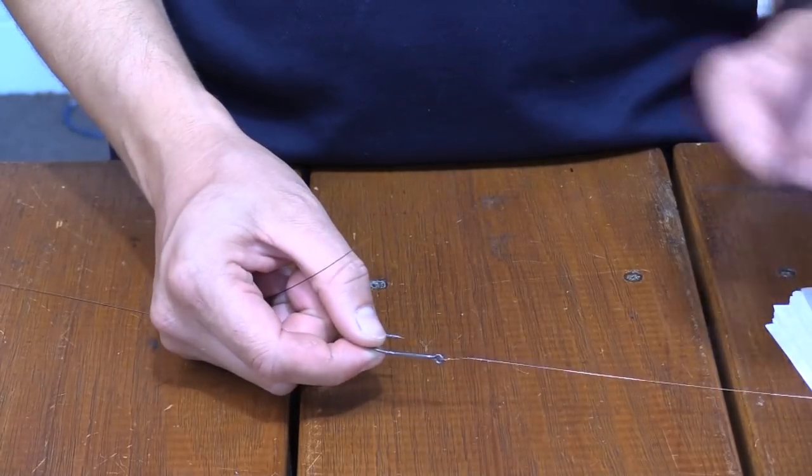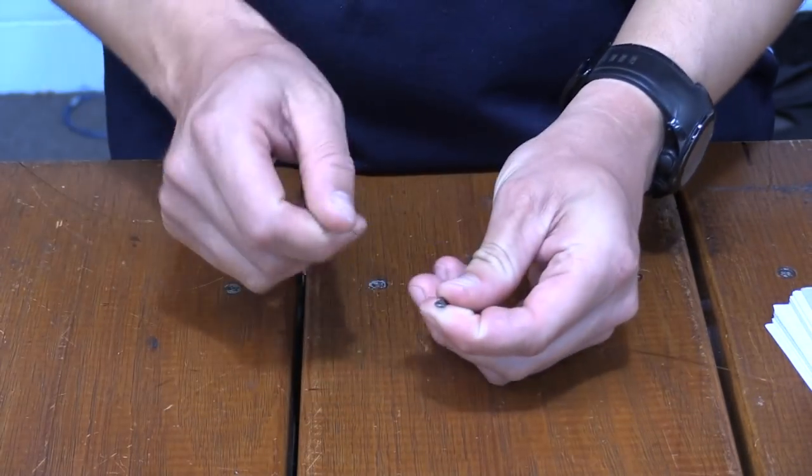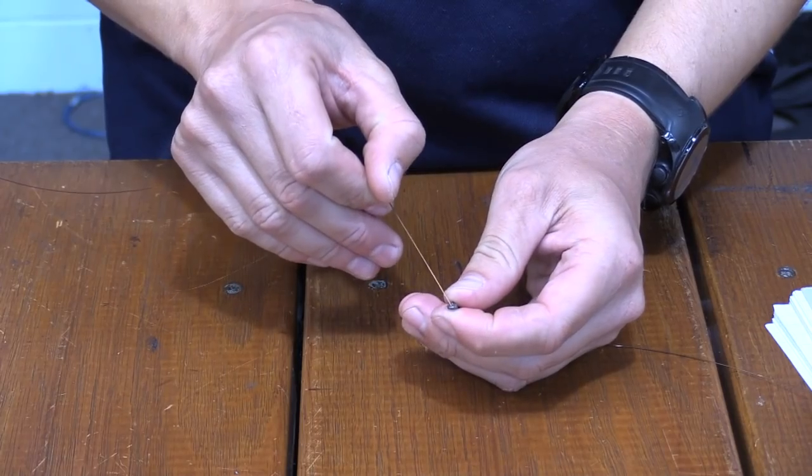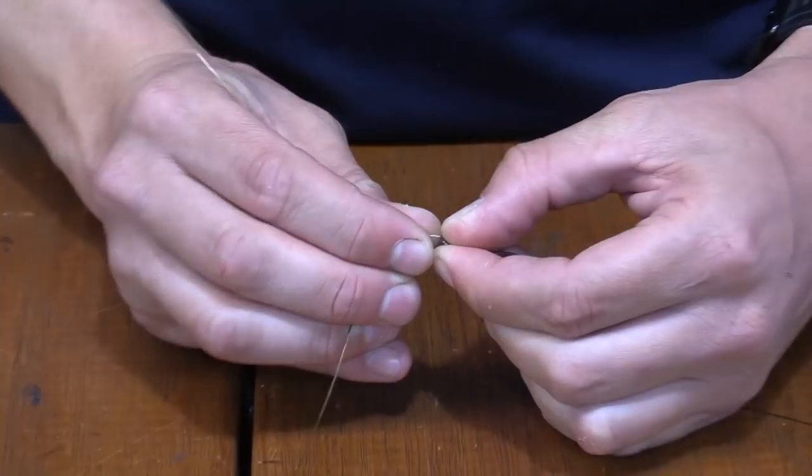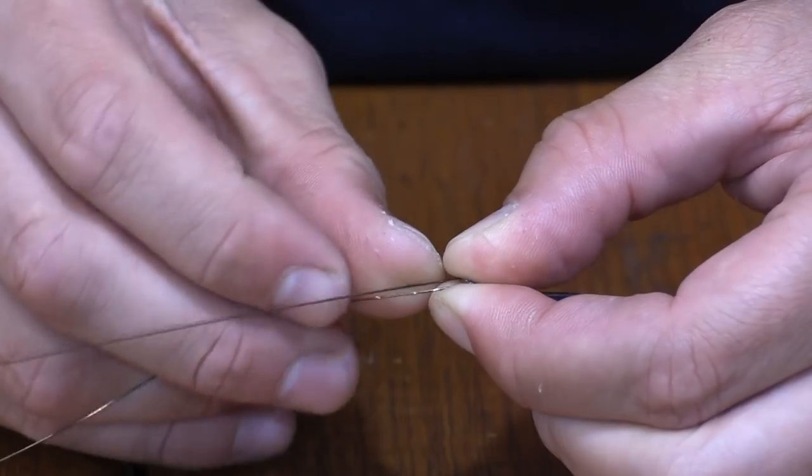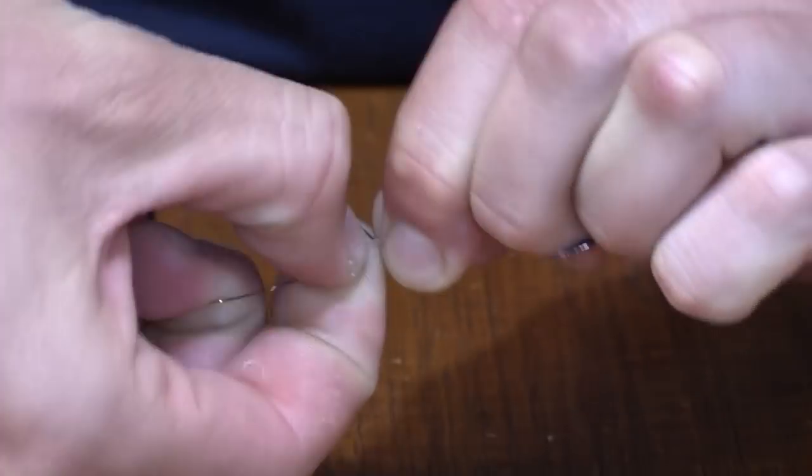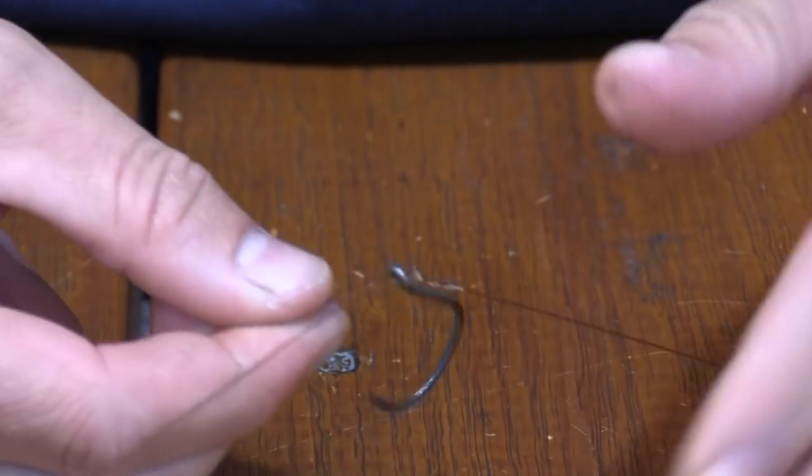Gather back your single hook that you've already tied and feed through your second piece of wire. Following the same procedure, hold it, cross it over, do one 45 degree angle turn and that'll lock it off for you.